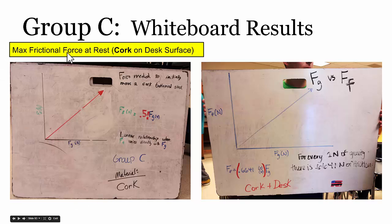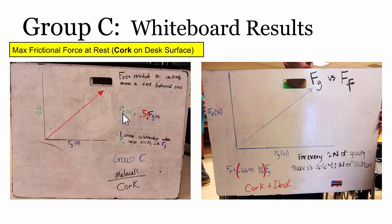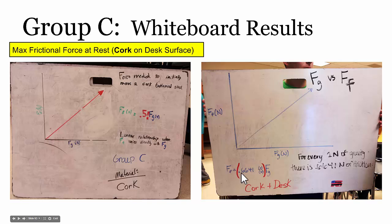Here we're looking at the maximum frictional force that exists between two surfaces — specifically cork and a desk surface — while things are at rest. Both groups found that there's a proportional relationship between the weight of an object, or the force of gravity on it, and the size of the force of friction. They also found that the force of friction was always smaller than the force of gravity by some coefficient or percent. One group found the biggest force that friction could be was about half the size of the object's weight.